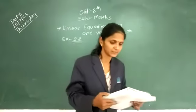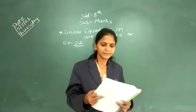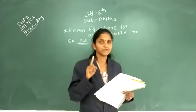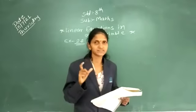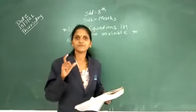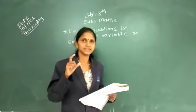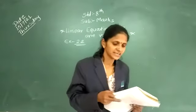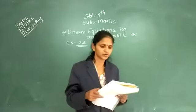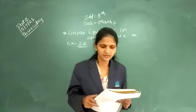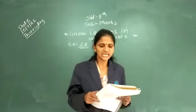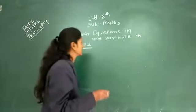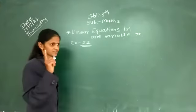What is our second question? The perimeter of a rectangular swimming pool is 154 meters. Its length is 2 meters more than twice its breadth. What are the length and the breadth of the pool? First, understand the question: there is one rectangular swimming pool.